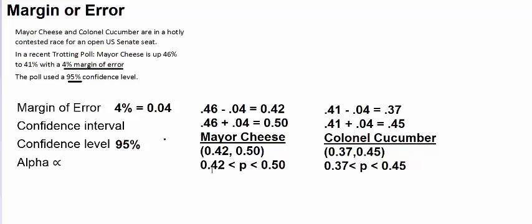One in every 20 times we perform a poll like this, we're expecting to get the parameter wrong. We're expecting the parameter to fall outside our confidence interval. So polling companies during election season that are doing dozens of polls, and they're using a 95% confidence level, which is very common, one in every 20 of their polls you would expect to be completely wrong.